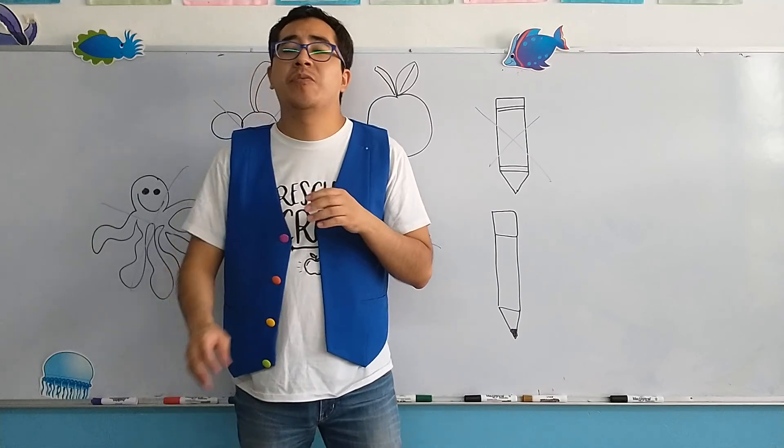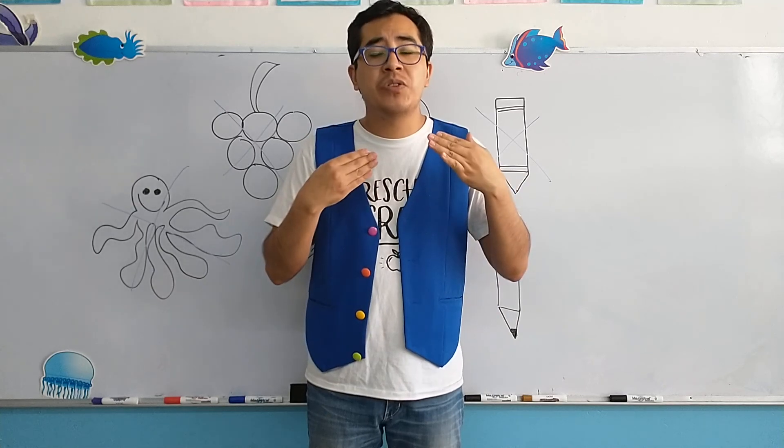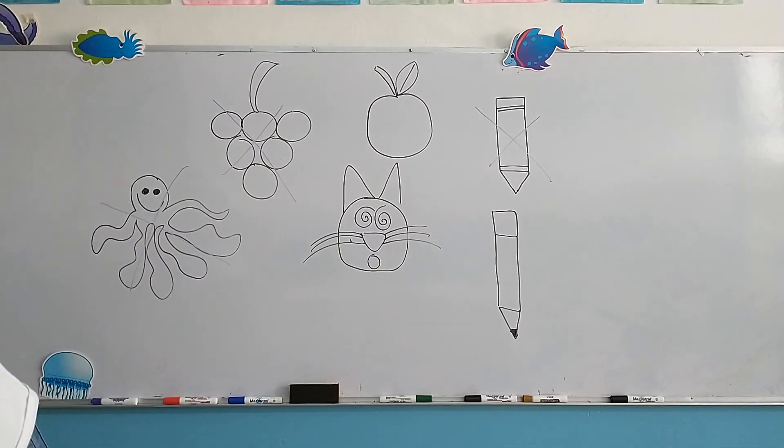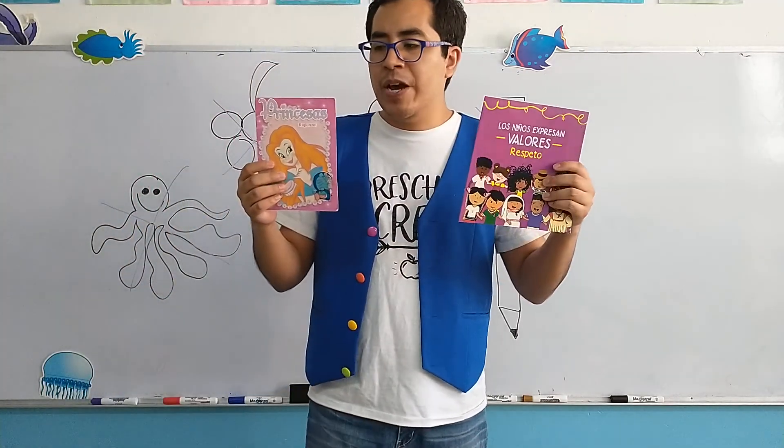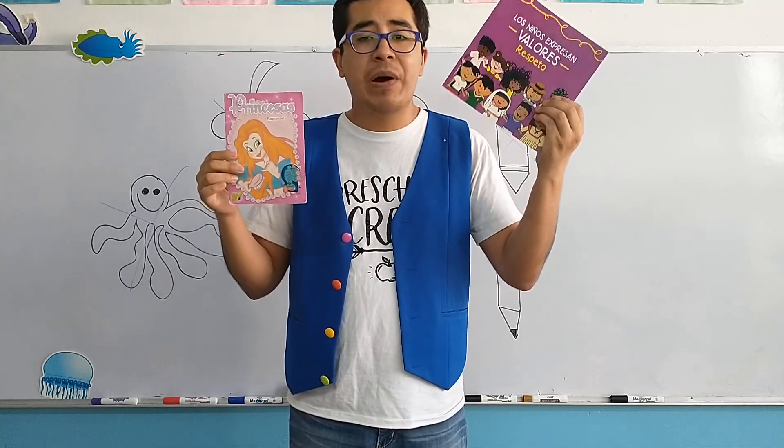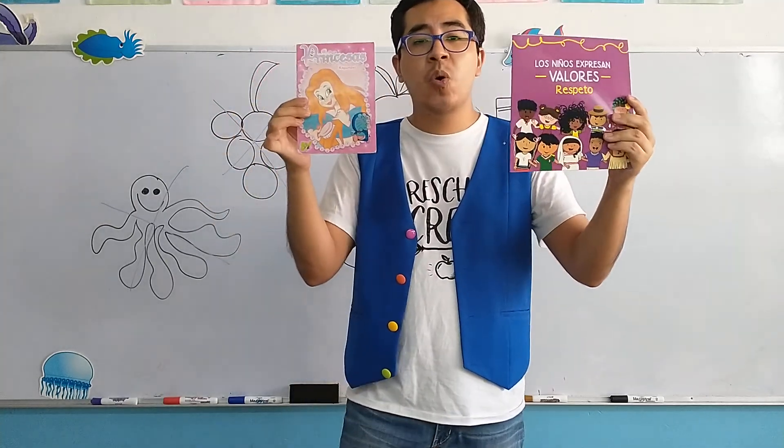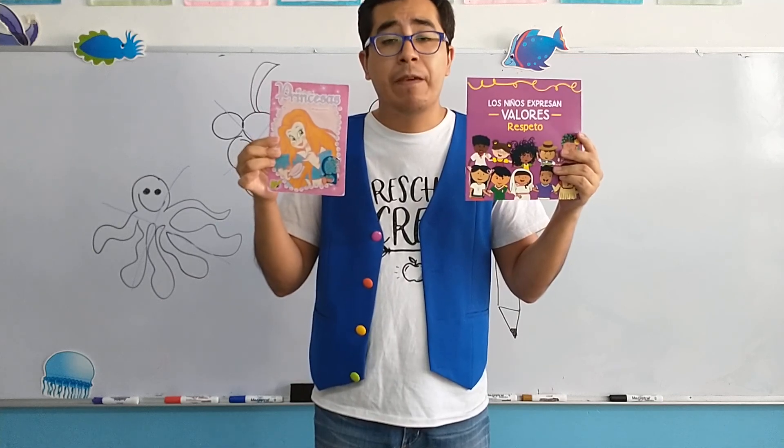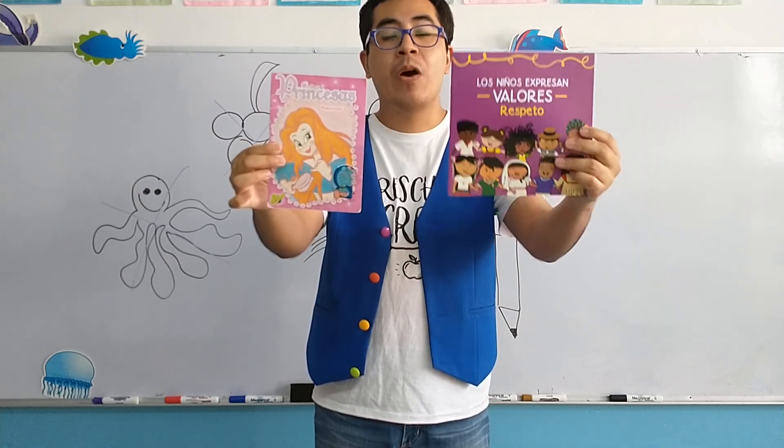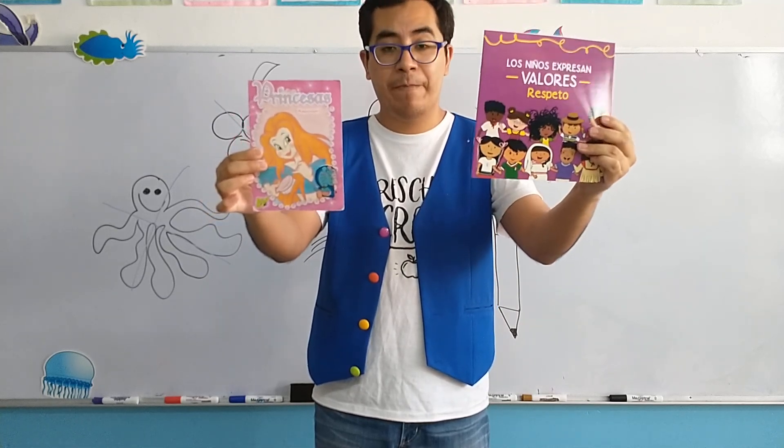Now continuing with this review of the color, I'm going to show you several objects and you will have to tell the teacher which one is purple. Let's begin with some books. The first one, it's about princesses. The second book, it's about children. Which one of these two is color purple? Number one or number two? Number two is the one that is color purple, the book of the children. Excellent.